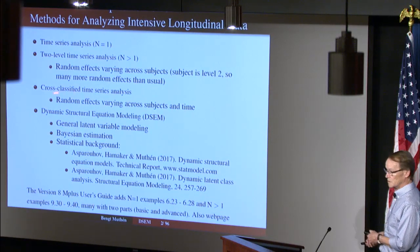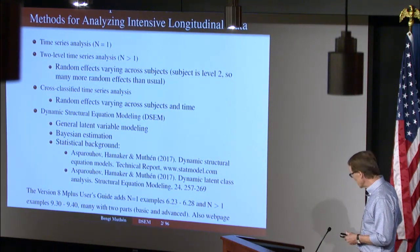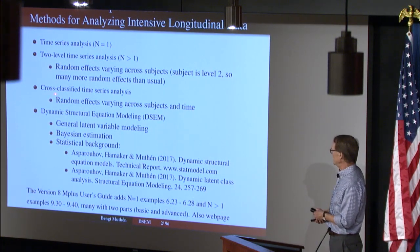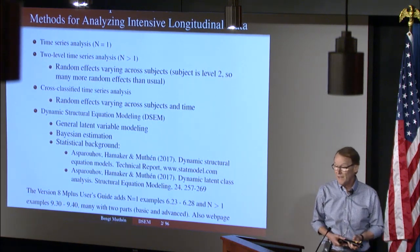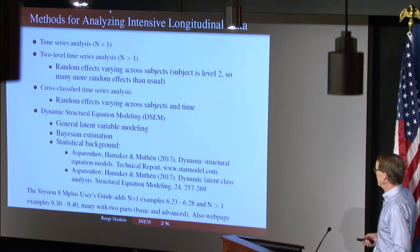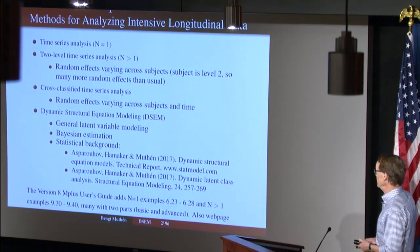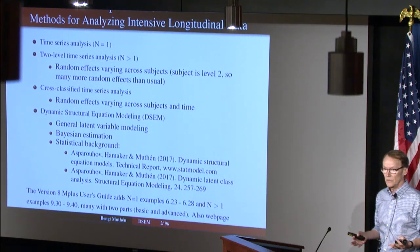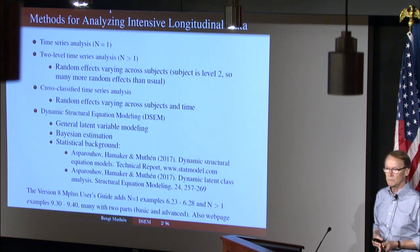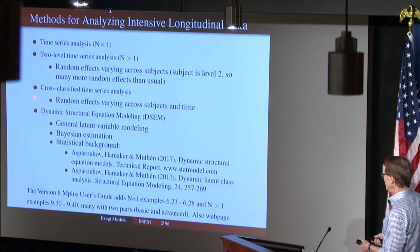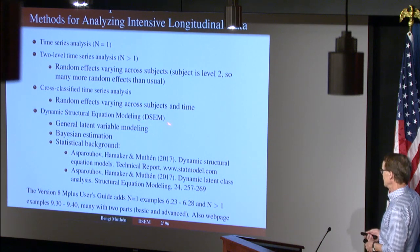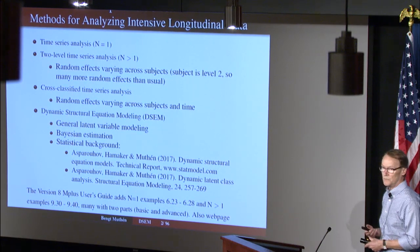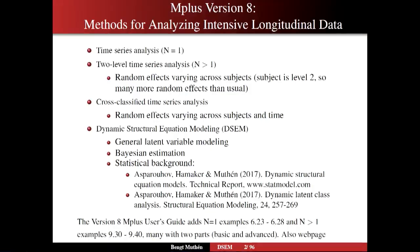Tiomar also managed to go into the cross-classified area, which is a generalization of the two-level case where random effects vary not only across subjects but also across time. That's really exciting. Putting all of these techniques together and adding the general parameterization of structural equation modeling on top of that, we reach what we call DSEM — dynamic structural equation modeling. So general that you can only do it through Bayesian estimation. ML can be used for some special cases, but not the general cases we're interested in.